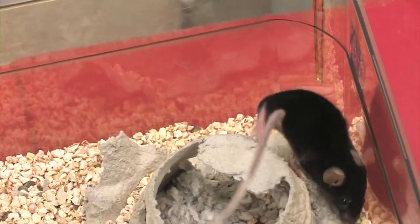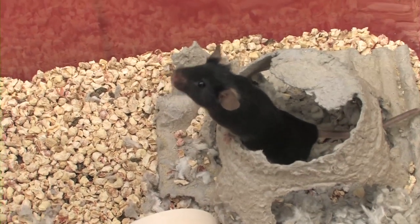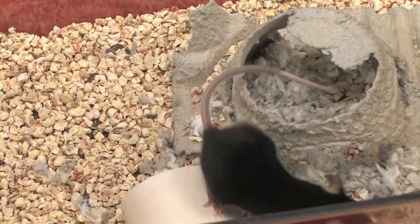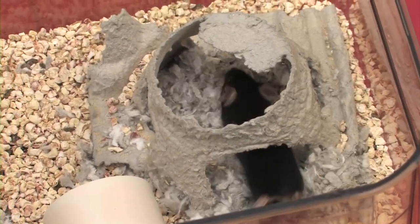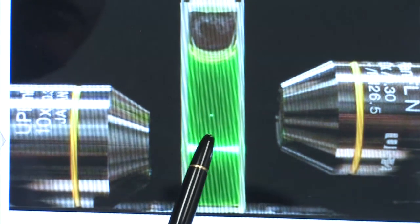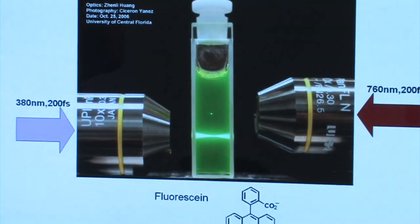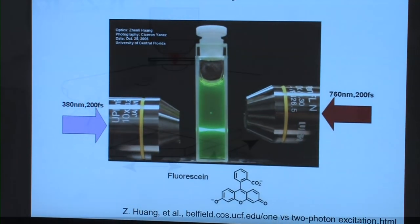So we fluorescently label structures of interest in the brain. Either we label the blood vessels or neurons with a dye that, when it absorbs light of one color, it emits light of a different color, a fluorescent dye. And then we use very short pulses of laser light focused down into the brain to excite this fluorescent dye in one small three-dimensionally localized spot. Because the dye is excited in only one spot, any fluorescence that we record we know must have come from that one spot.